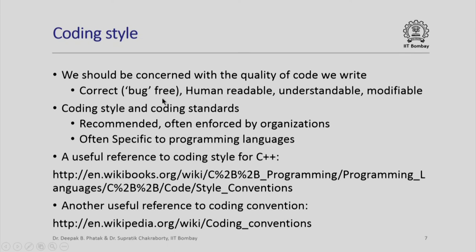When we write code which has no errors, all we have ensured is that the C++ compiler correctly understands our intent and translates our programs into machine language software which works in an error-free fashion. But because the software we write will be required to be maintained, modified and extended — all tasks done by human beings — it is equally important to ensure that the software is handleable by humans. That is the reason why there are established coding styles and coding standards, recommended for all programming languages and often enforced by organizations that make their work developing commercial software for clients.